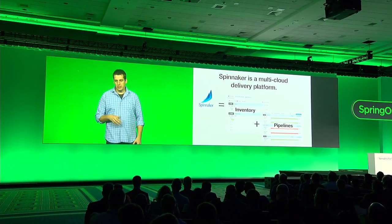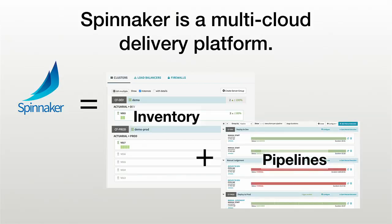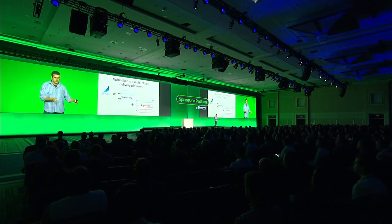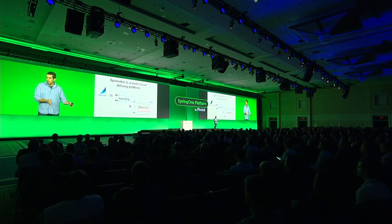The second component is pipelines. We know you have some pipeline mechanism going — it may look something like Concourse, it may be Jenkins, it may be a set of custom scripts. Ideally, in the future, we'd like you to leverage your existing assets for continuous integration and allow Spinnaker to help you with the delivery aspects of your pipeline.